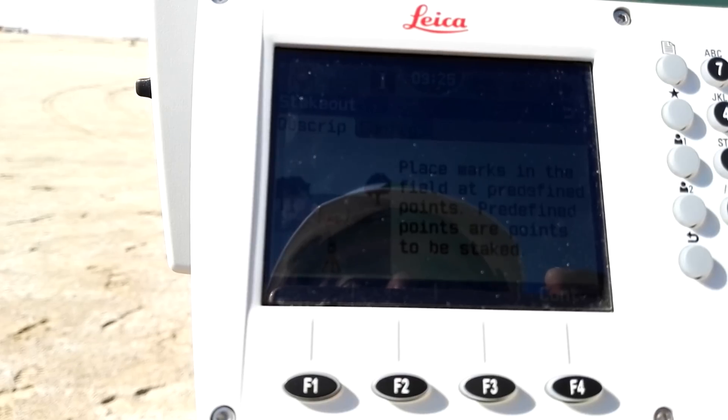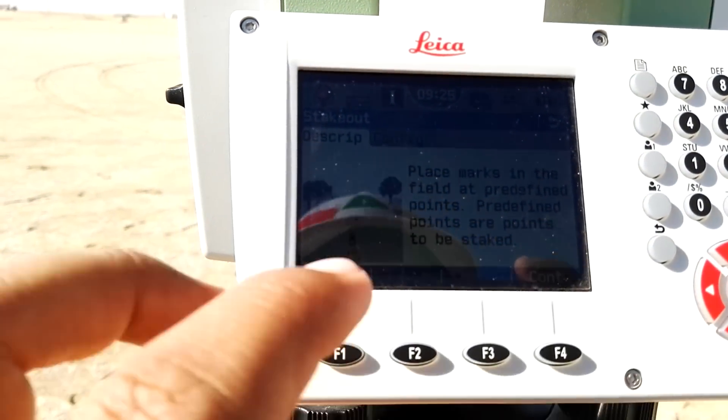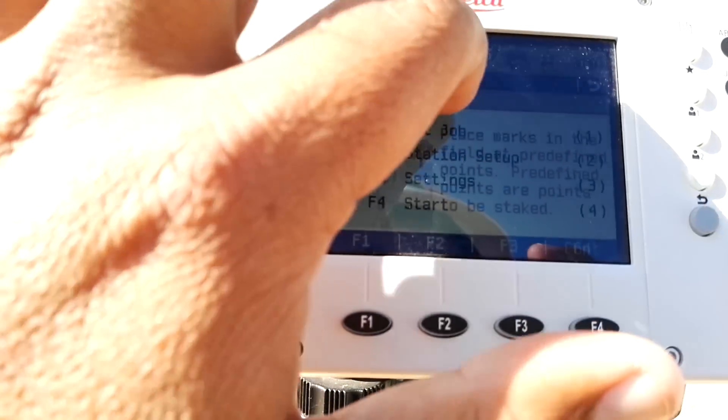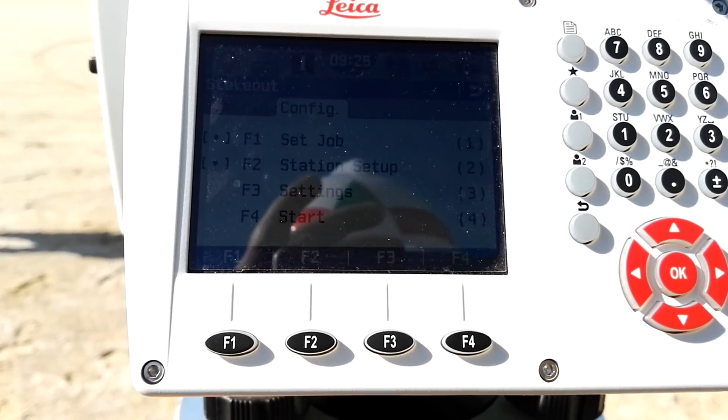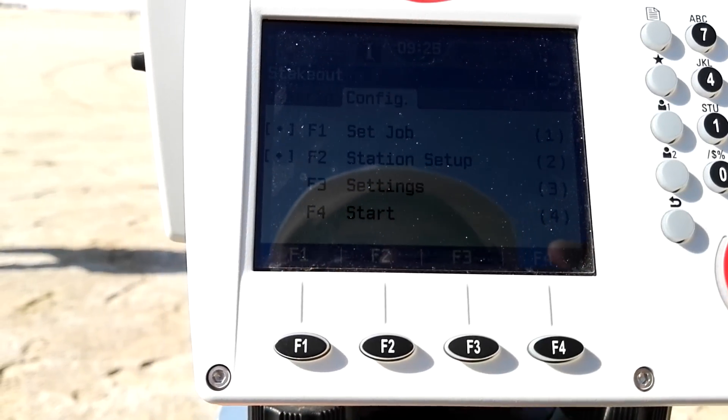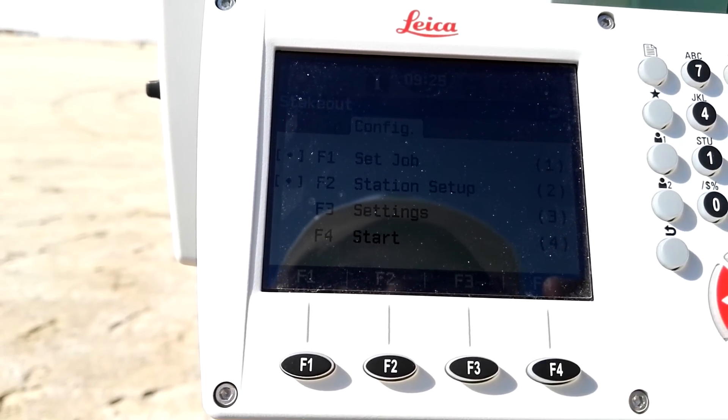The prided find points are points to be staked. So the second is configuration. I will go to the configuration and there is configuration: first is set job, second is your station setup, third is setting out and fourth is start.